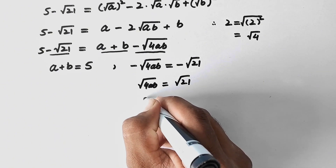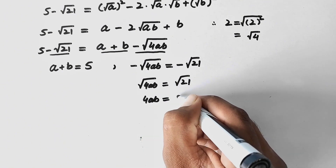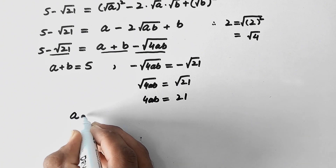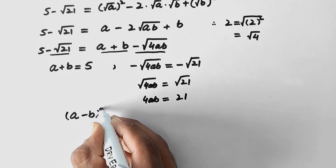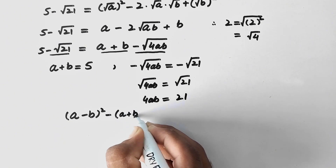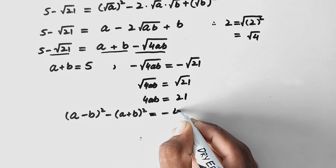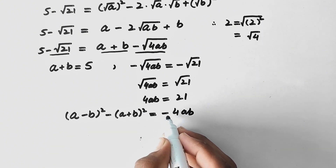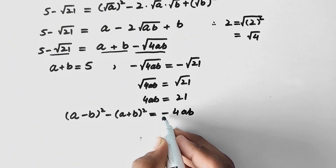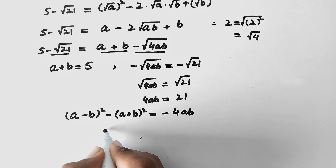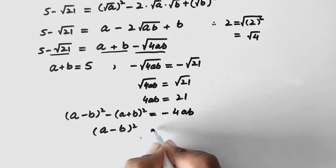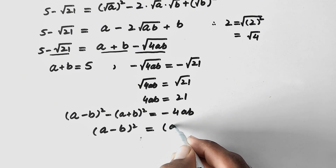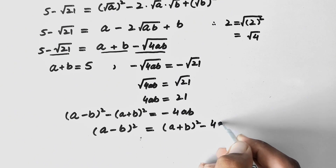Next, we use the identity: (A - B)² = (A + B)² - 4AB. We will open the brackets on both sides to confirm both sides are equal, then rearrange to get (A - B)² = (A + B)² - 4AB.